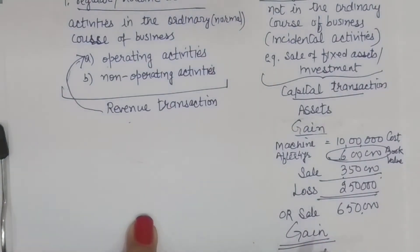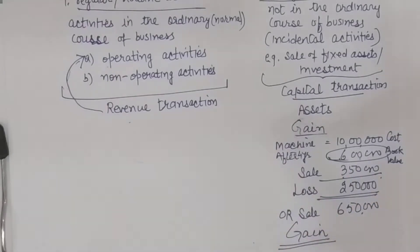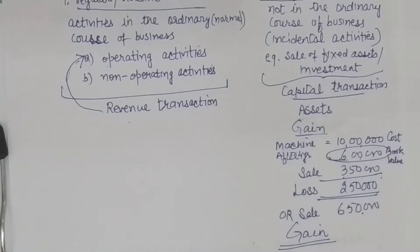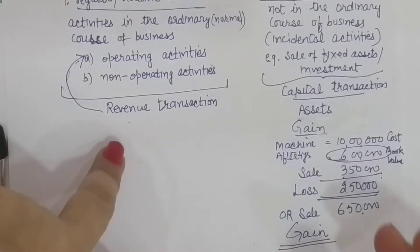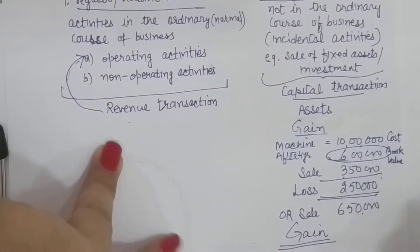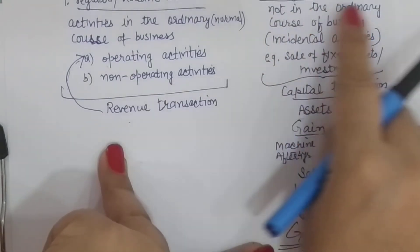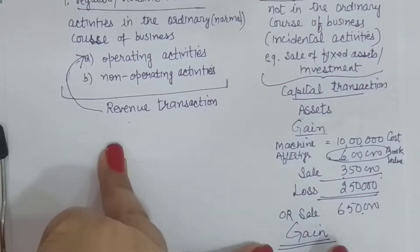So gain is the increase in the owner's claims. Jo bhi gain hoga, woh sab owner ko milna hai. Jo bhi losses honge, woh bhi owner ko bear karne hain. To isse owner ki equity kam ya zyada hoti hai. Agar aapko koi bhi profit hota hai, to owner ki equity badh jaati hai — kyunki woh itna claim business mein se nikal sakta hai. Agar loss hota hai, to iski equity mein decline ho jaata hai. So gain means any kind of profit — any kind of increase in owner's equity arising out of irregular or non-recurring activities.